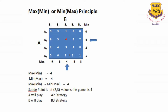Similarly, for A playing A2 strategy, the minimum is 4. A playing A3 strategy, the row minimum is 2. Similarly, A playing A4, the minimum is 1. So when he has got the minimum payoffs, A will always definitely play a strategy which is going to maximize his minimum payoffs. So if you take the maximum of minimum payoffs, it is 4. Among 0, 4, 2, 1, it is 4.